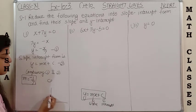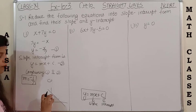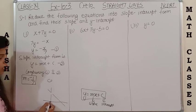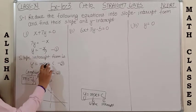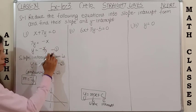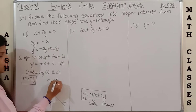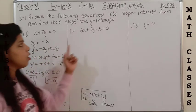The y-intercept c means when the line touches the y-axis, the distance from the origin to that point. Here there is no constant term, so comparing gives c = 0. That means slope is -1/7 and the y-intercept is 0.